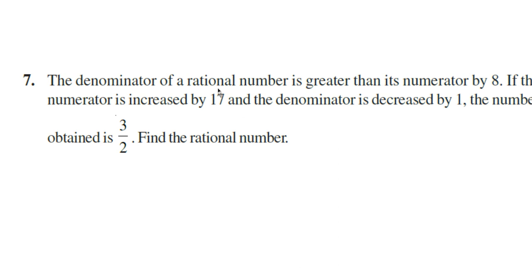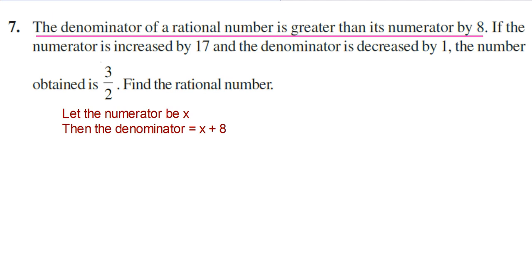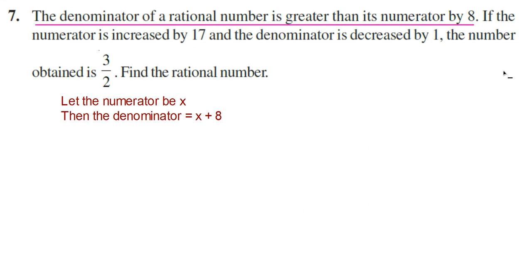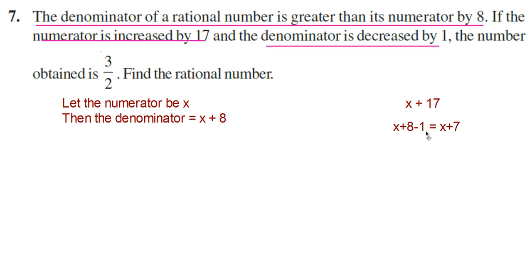Here is question number 7. The denominator of a rational number is greater than its numerator by 8. If the numerator is increased by 7 and the denominator is decreased by 1, the number obtained is 3/2. Find the rational number. The first condition is: denominator is greater than numerator by 8. So if you take numerator as x, denominator will be x + 8. When the numerator is increased by 7 it becomes x + 7, and denominator decreased by 1 means (x + 8) − 1 = x + 7.